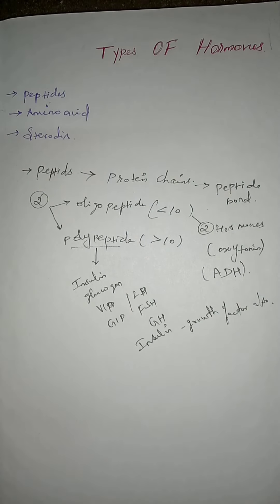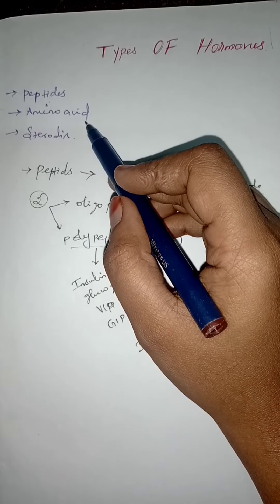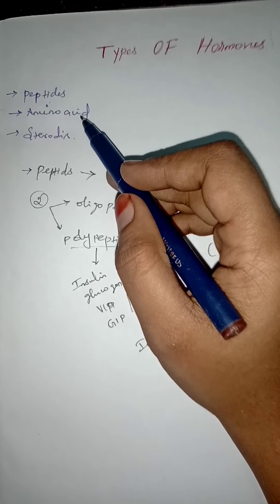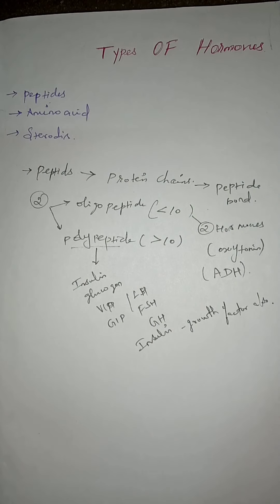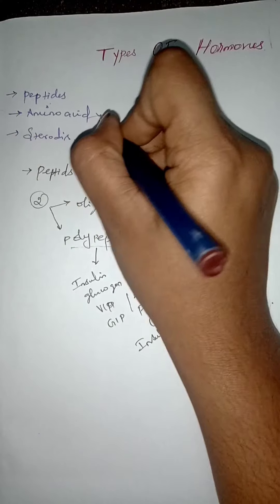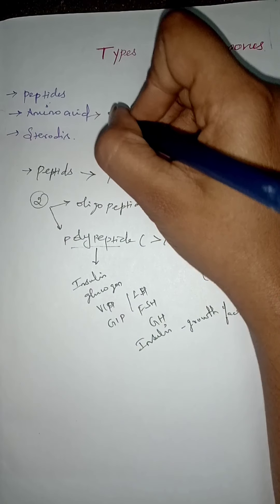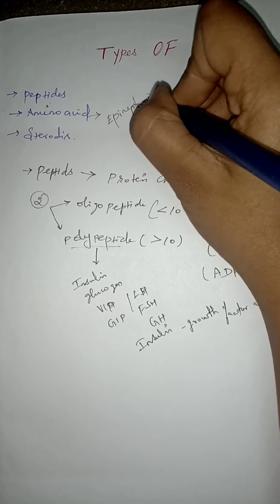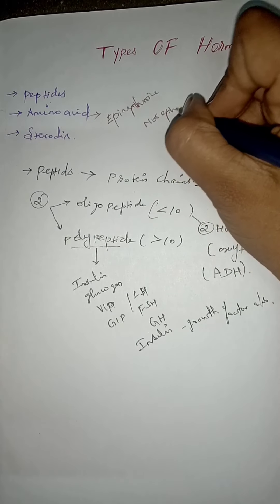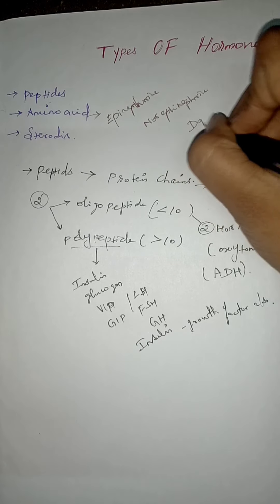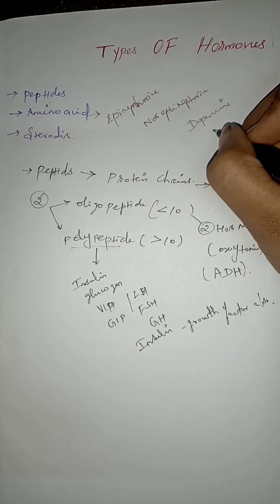Next are amino acid hormones. There are also amino acid hormones in our body, and these are basically derived from amino acids. Some examples are epinephrine, norepinephrine, dopamine, and serotonin.